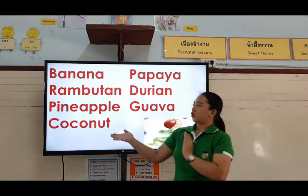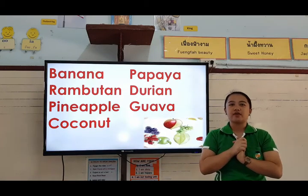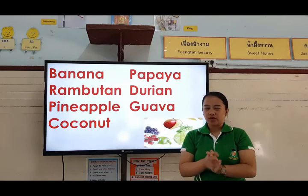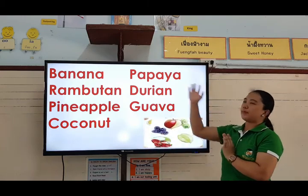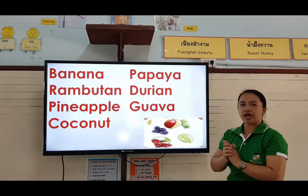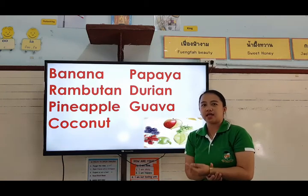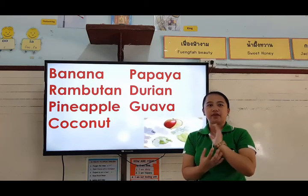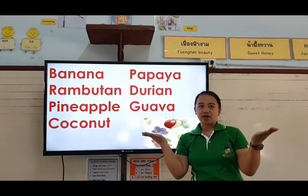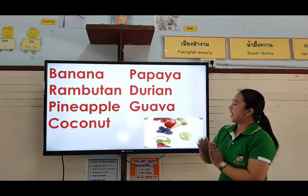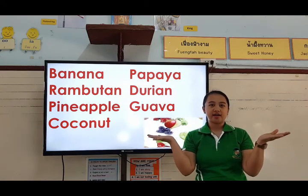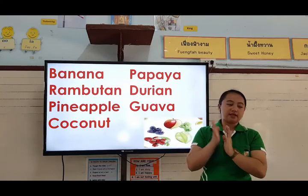And next, we have coconut. What is the taste of a coconut — is it sweet or sour? Sweet. Sweet, very good. How about papaya? Sweet. Okay, very good. And durian — what do you think? Have you ever tasted durian? If yes, what do you think is the taste of a durian — is it sweet or sour? Okay, next, we have guava. Is it sweet or sour? Okay, it's sweet. Very good.